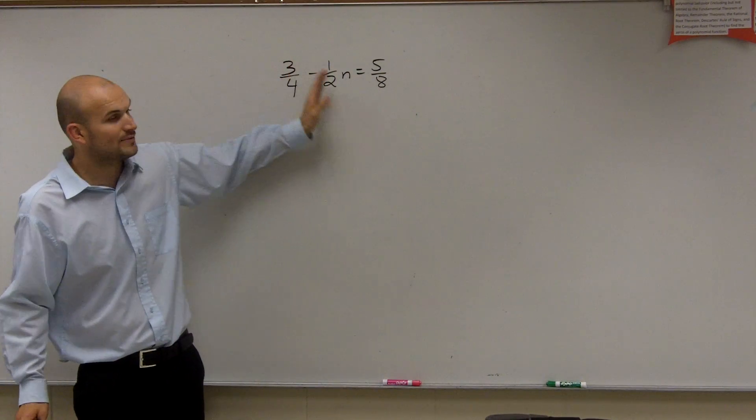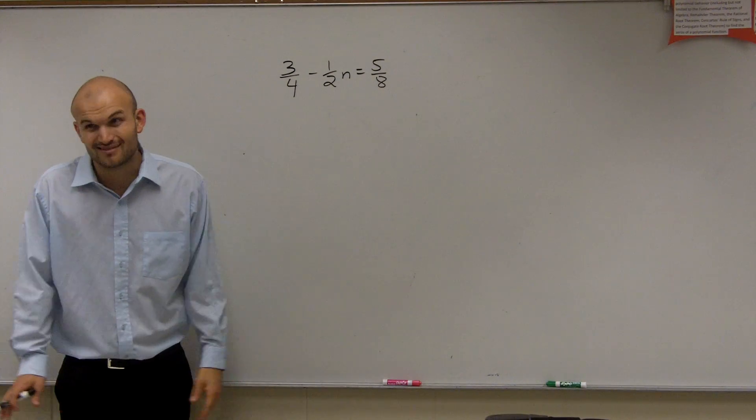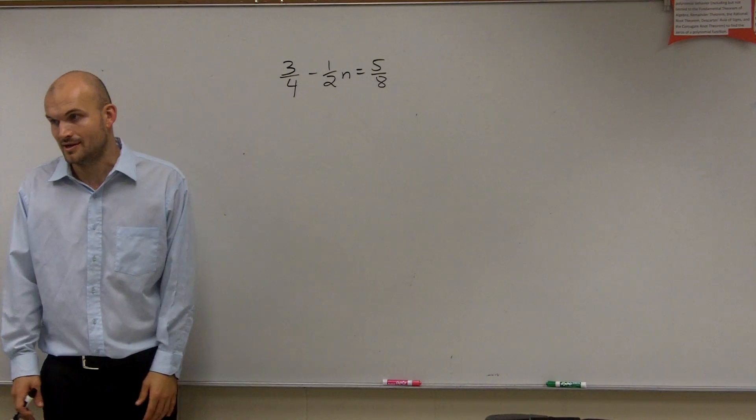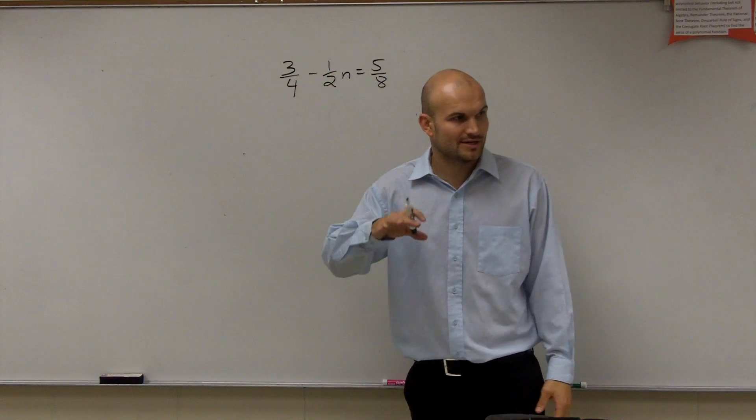So that means we'd have to multiply all three of these terms by 2 times 4 times 8, which would be 64. Well, that's like, it's getting crazy, right? So that would be 64 times... and you could do that. But let's look at the simplest way to do this.